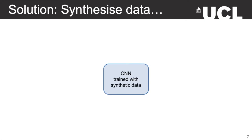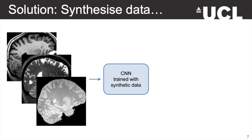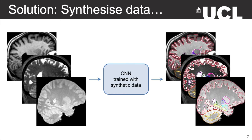The solution we propose in this work is to train a network with synthetic data instead of real data. Ideally, the synthetic images would cover all the variability observed in brain MRI scans. As a result, you could input an image of any contrast and any pre-processing type and obtain a good segmentation. But now the question is: what would this synthetic data look like and how would we obtain it?